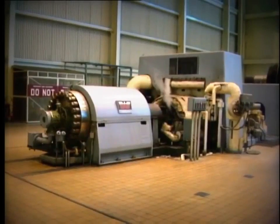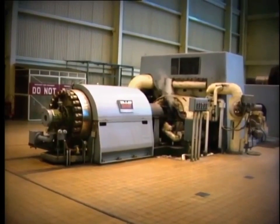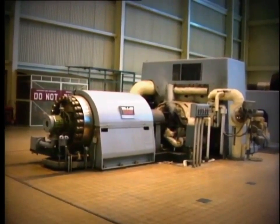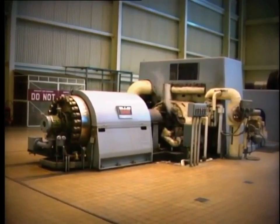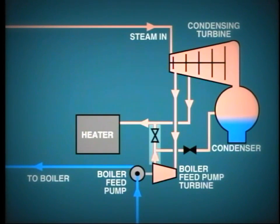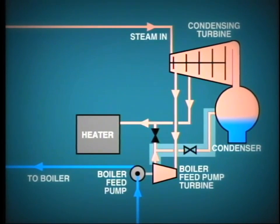On large turbine generator units, the feedwater pumps are sometimes driven by steam turbines using extraction steam or cold reheat steam. The discharge from the turbine drive may then be piped to a lower point of extraction for further heat utilization. Alternatively, it may be piped to the condenser so that the condensate may be recovered even if the latent heat is lost to the cooling water.